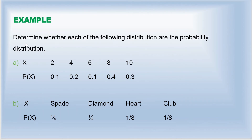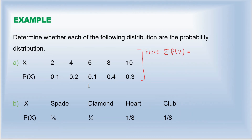Next example: determine whether each of the following distributions is a probability distribution. In part (a), we check the sum of all probabilities: 0.1 + 0.2 + 0.1 + 0.4 + 0.3 = 1.1, which is not equal to 1. Since it does not satisfy the first condition, this is not a probability distribution.